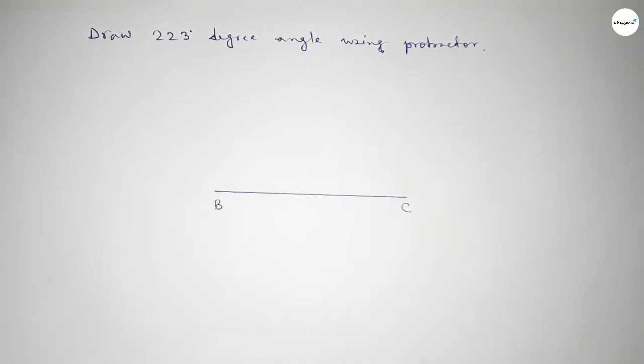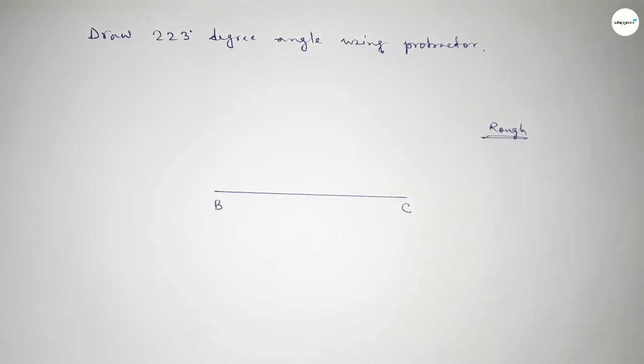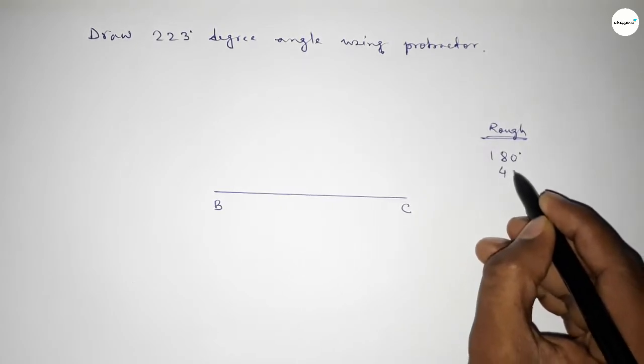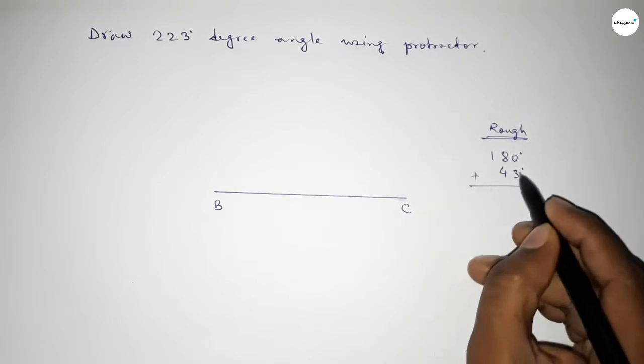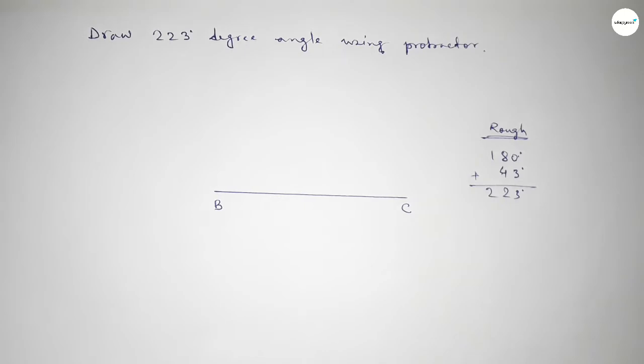Taking here point B and here point C. Now roughly discussing some calculation here: if we add 43-degree angle with 180 degrees, then we can get 223. So first we have to count 180 degrees.